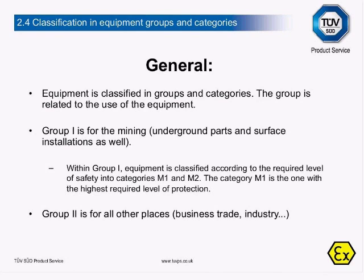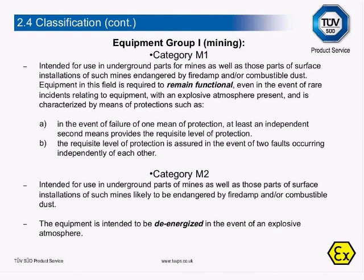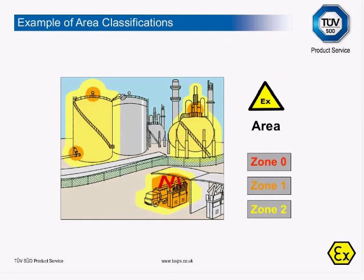Equipment is classified in groups and categories. The group is related to the use of the equipment. Group 1 is for mining — underground parts and surface installations. Group 2 is for other places: business, trade, etc. Equipment Group 1 for mining is detailed in two categories: Category M1 and Category M2. Here we can see a typical example of a hazardous area classification overview schematic showing different areas — Zone 0, Zone 1, Zone 2 for gases — noting the different types of symbol: the EX sign for the area and the EX symbol for the component or equipment.